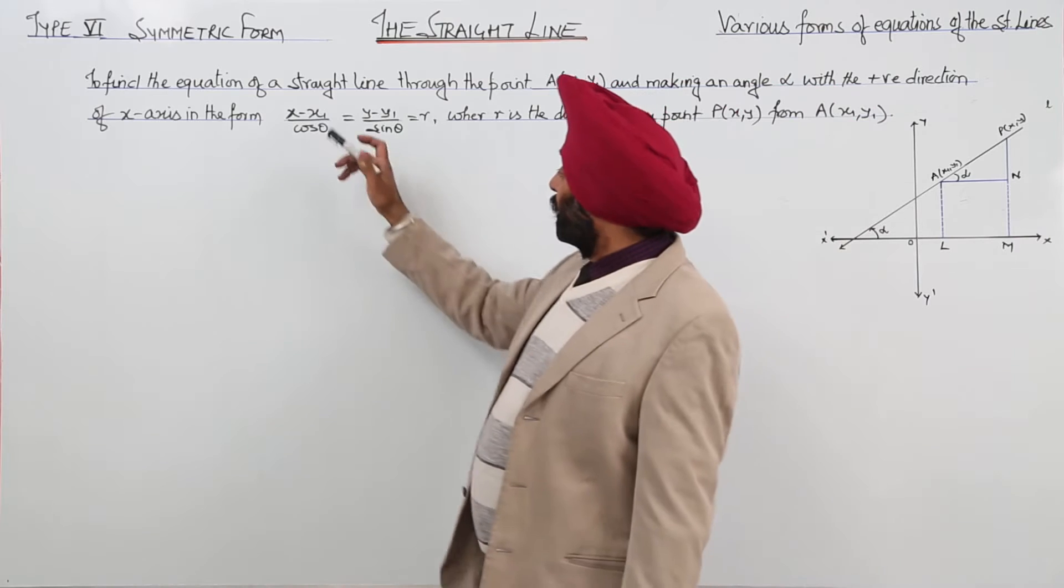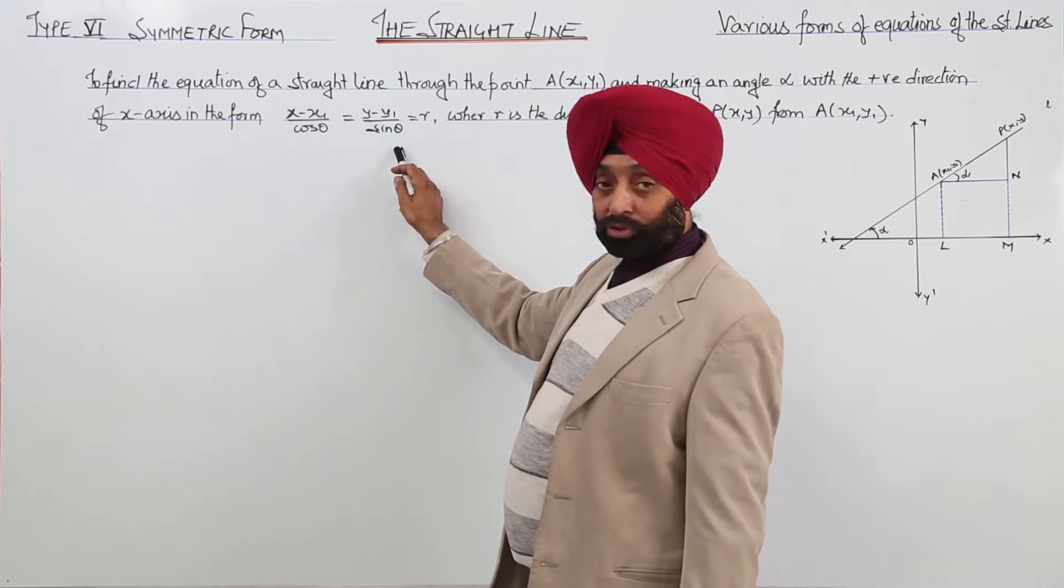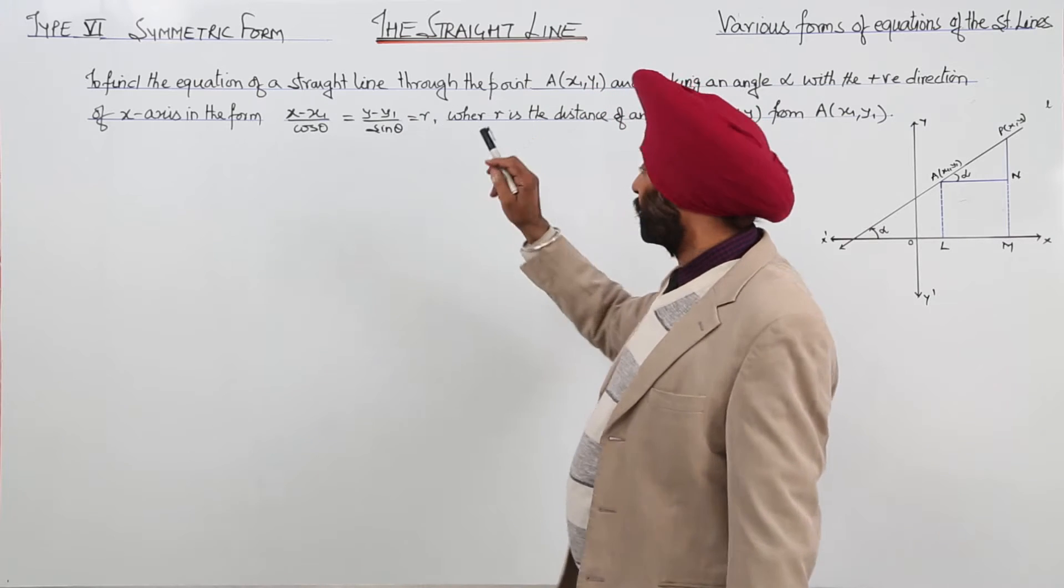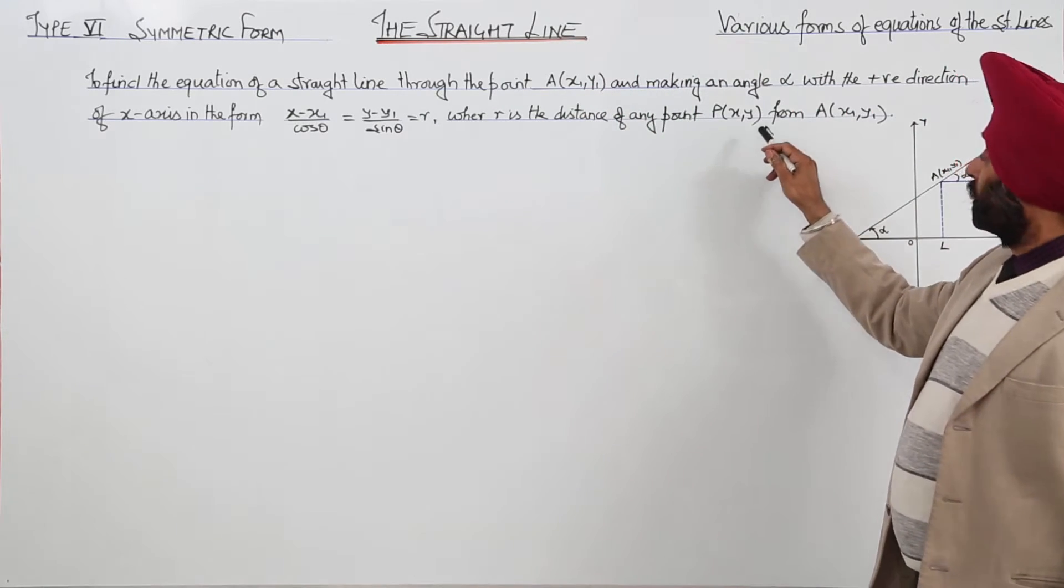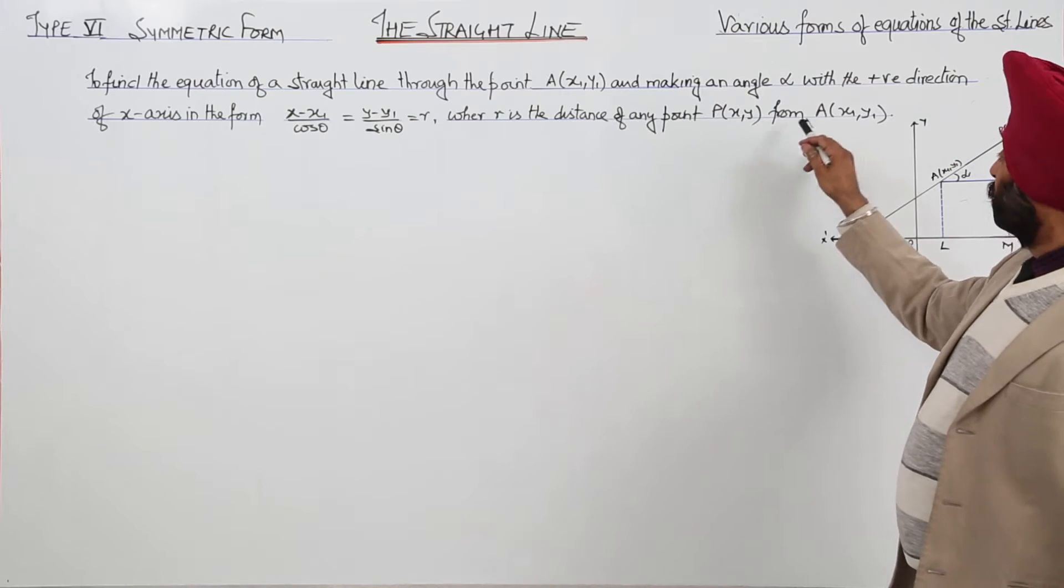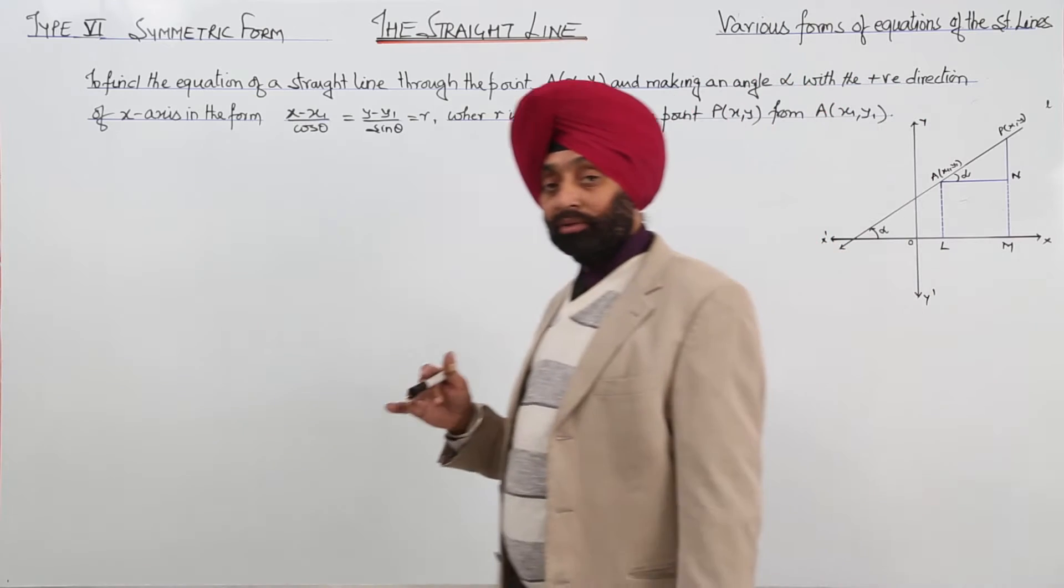Now, what is the symmetric form? x minus x1 upon cos theta is equal to y minus y1 upon sin theta is equal to r, where r is the distance of any point P, say x comma y from the point A at x1, y1.